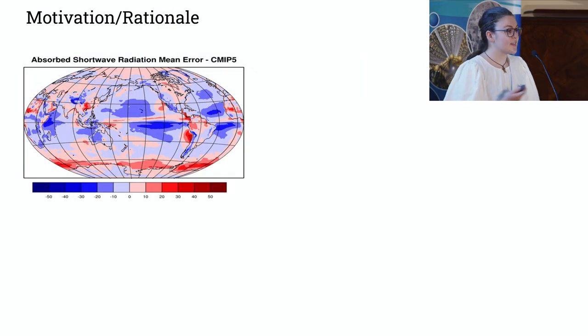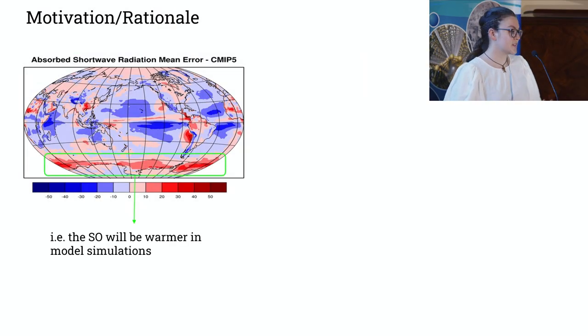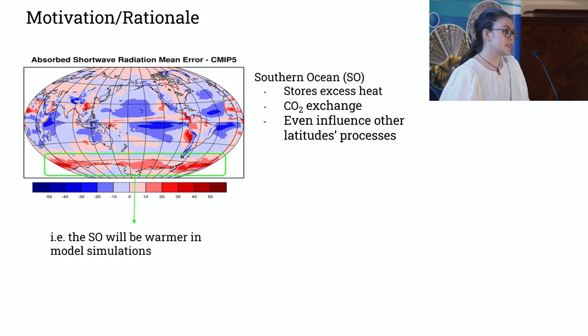In the previous generation, CMIP5, comparisons between measurements and model output revealed radiation biases — the models were representing more incoming solar radiation reaching the surface than what we actually observe. This can be translated into having a warmer Southern Ocean, as we can see here.